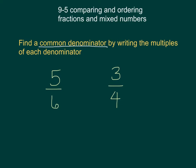To do that, you want to write the multiples of each denominator. So we have a 6 and a 4, and we need to find the numbers that are in common with both of those denominators. So if we list the multiples of 6, we have 6, 12, 18, 24.